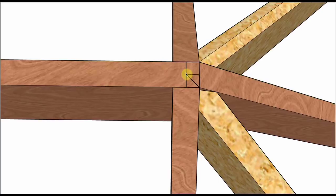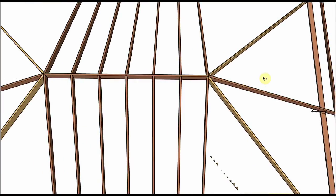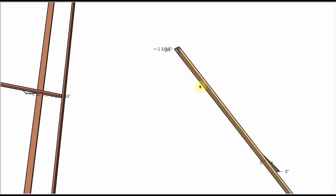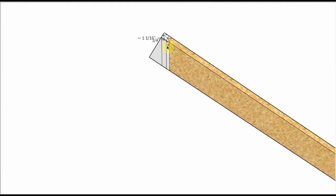We'll come over here to a piece of stock for a hip rafter. The common rafters in this roof are 2x6, so that means the hip rafter is one size bigger—it's 2x8.